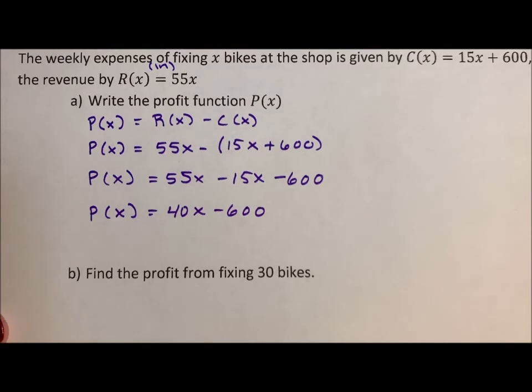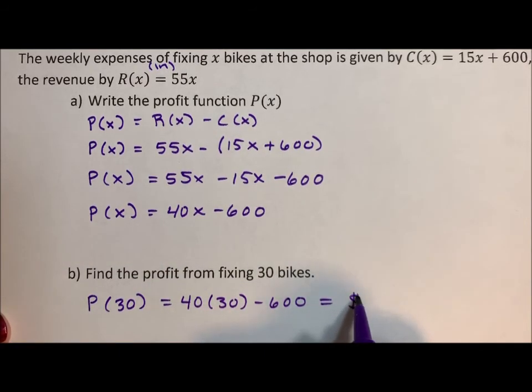That's how we figure out our profit. So let's find the profit of fixing 30 bikes. So the profit of 30 bikes, again not multiplication, it's just the input of our profit function. 40 times 30 minus 600 is going to be $600.